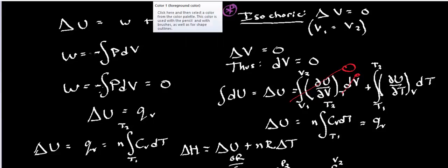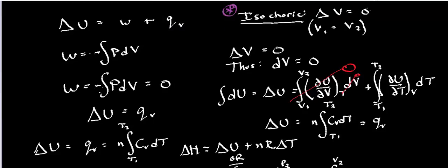Now, with an isochoric process, that implies that the change in volume is zero, meaning there's no change in volume. The volume is constant.